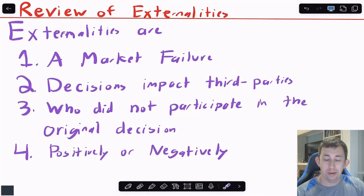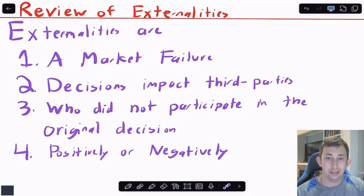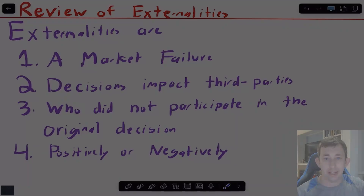As a basic review — you might have seen externalities before, especially if you've taken an intermediate micro class — externalities are a type of market failure. What happens is two parties are making a decision, and some third party that's not involved in that decision is going to be impacted by it. The two people making the decision generally aren't thinking about that impact on the third party, and that impact can be positive or negative.